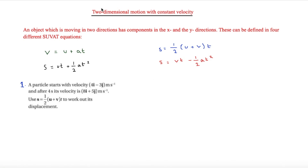This is Simon Sarkin and in this video we are looking at two-dimensional motion with constant velocity. This means SUVAT equations in two dimensions. An object moving in two directions has components in the x and y direction, and we'll normally see this in terms of i and j.